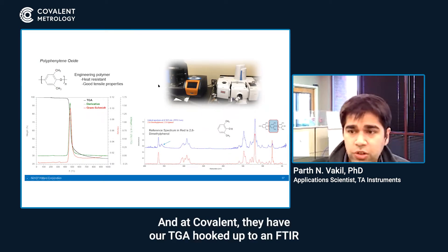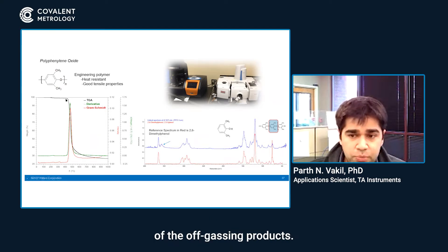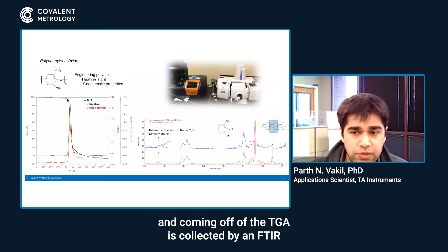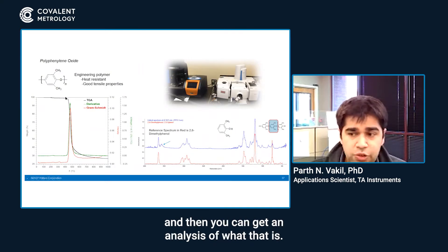At Covalent, they have their TGA hooked up to an FTIR, which allows them to look at the FTIR analysis of the off-gassing products. Whatever is decomposing into its gaseous form and coming off of the TGA is collected by the FTIR, and then you can get an analysis of what that is.